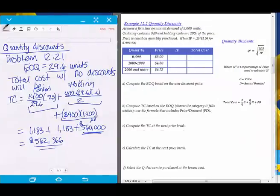Here we've got problem number 12.21. We calculated the economic order quantity based on the information given to us in the problem, and we come up with 29.6 units. First thing we need to do is calculate the total cost with no discounts. I've got the demand divided by the economic order quantity. The annual demand is 1400, economic order quantity is 29.6. We're going to multiply that times the S of 25. Then we've got the holding costs.